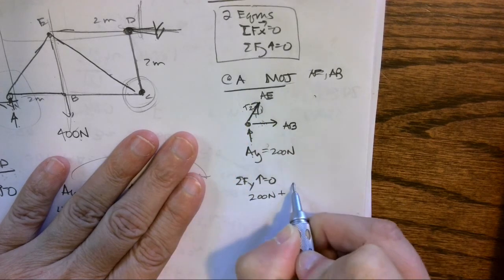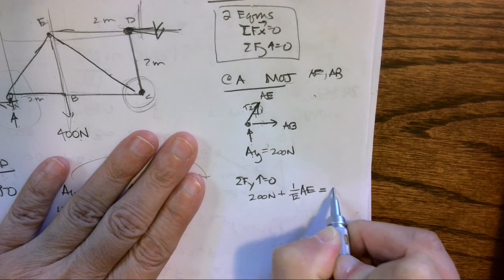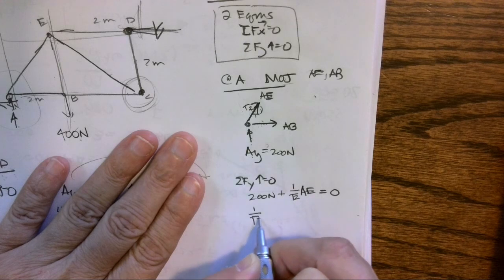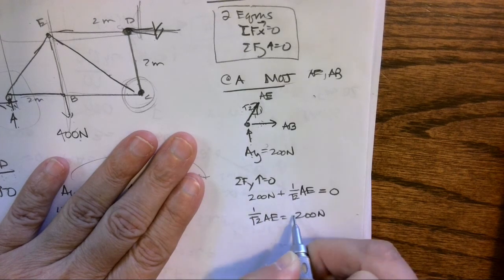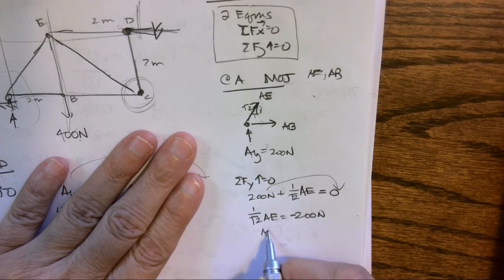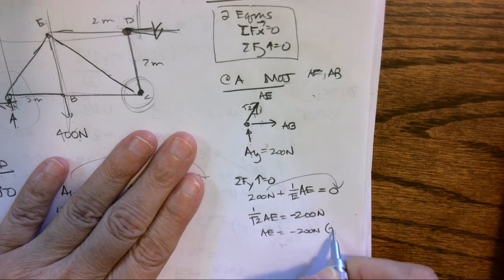And I have, starting here at the bottom, positive 200 Newtons—it's going up—and I've assumed this in tension, so the Y component is plus one over the square root of two times AE equals zero. So I need to isolate: one over square root of two times AE equals negative 200 Newtons, so AE equals negative 200 Newtons times the square root of two.